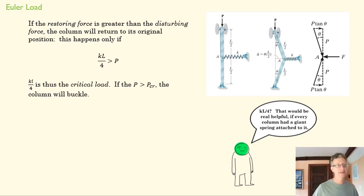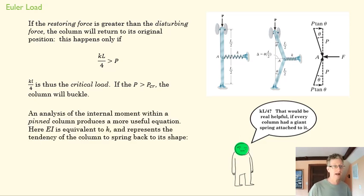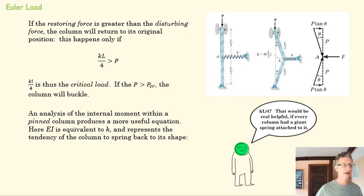KL over 4 doesn't help us a whole lot because there isn't actually a spring force — we don't have a K. But we can figure out ways to describe that K in terms we've already used in class. An analysis of the internal moment of a column — for instance, one that's pinned on both ends — lets us figure out an equation in terms we understand.